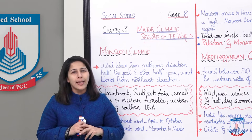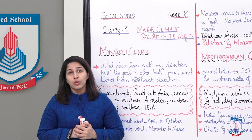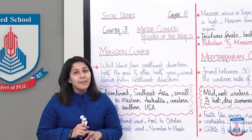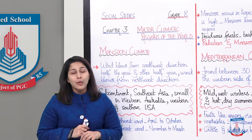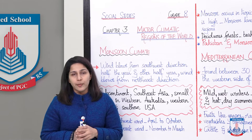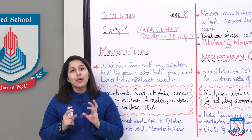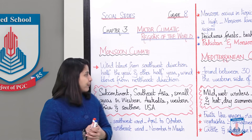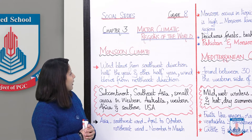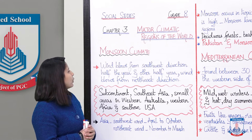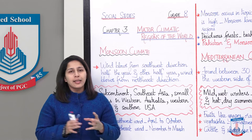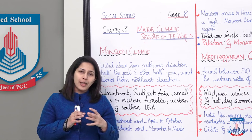Monsoon season — the name is absolutely right. There is a lot of rain in Pakistan around August and September; yes, it's this same climate I'm talking about. But this climate is not only in Pakistan — it is also found in many major regions of the world. Let's look at the characteristics: wind blows from the southwest direction for half the year, and from the northeast direction the other half.